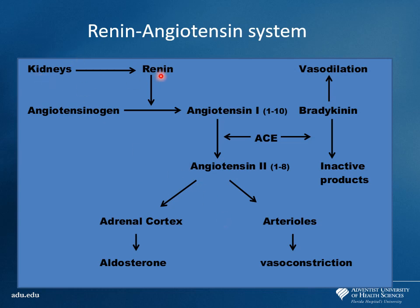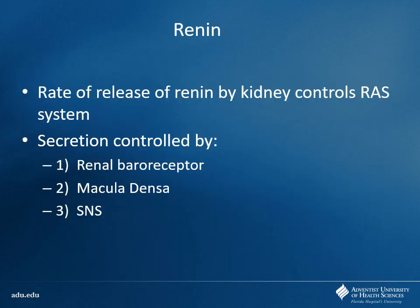The kidneys produce renin; angiotensinogen gets converted to angiotensin I; then angiotensin-converting enzyme converts angiotensin I to angiotensin II, the main vasoconstrictor. ACE also breaks down bradykinin, causing even more vasoconstriction. Decreased renal perfusion detected by baroreceptors, sodium detection by the macula densa, and sympathetic nervous system input all control renin release, with the kidneys being the main driver.